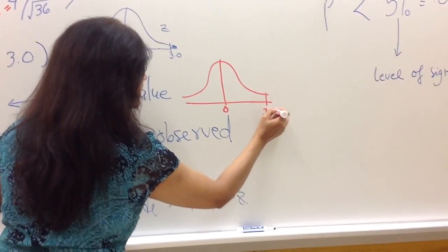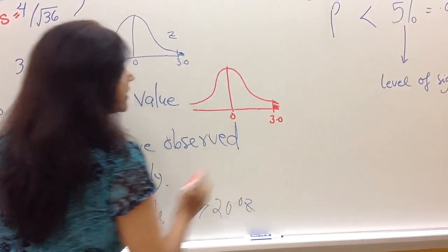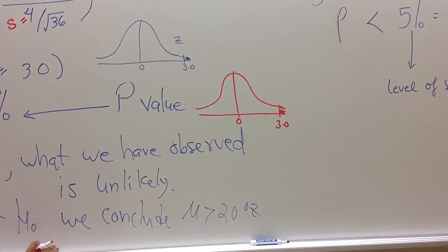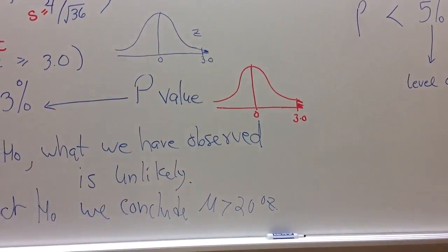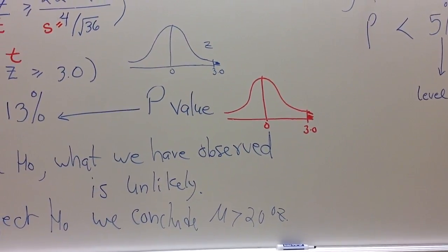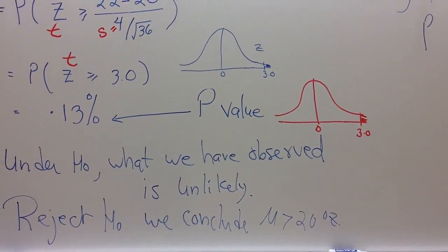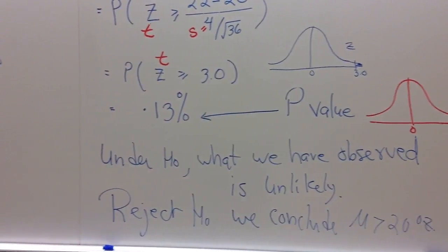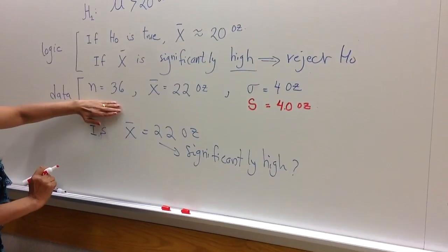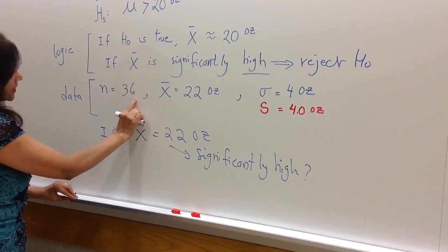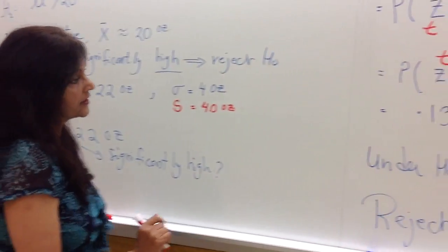So now we will read the T table. We have discussed in the class how to read the T table. Just as a refresher, we will read the T value or the area above 3 with 35 degrees of freedom. So where did that 35 come from? N is 36, so the degrees of freedom is 36 minus 1, which is 35.